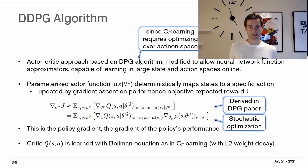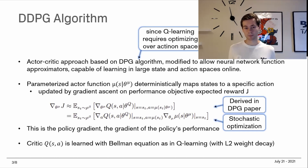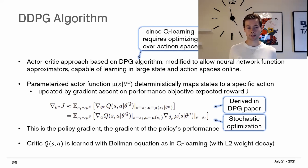The DDPG algorithm is an actor-critic approach based on the deterministic policy gradient algorithm, modified to allow neural network function approximators, and is capable of learning in large state and action spaces online. Q-learning requires optimization over the action space, which is why we're extending the framework using DDPG as opposed to Q-learning. It's a separate, deterministic approach to tackling this problem.